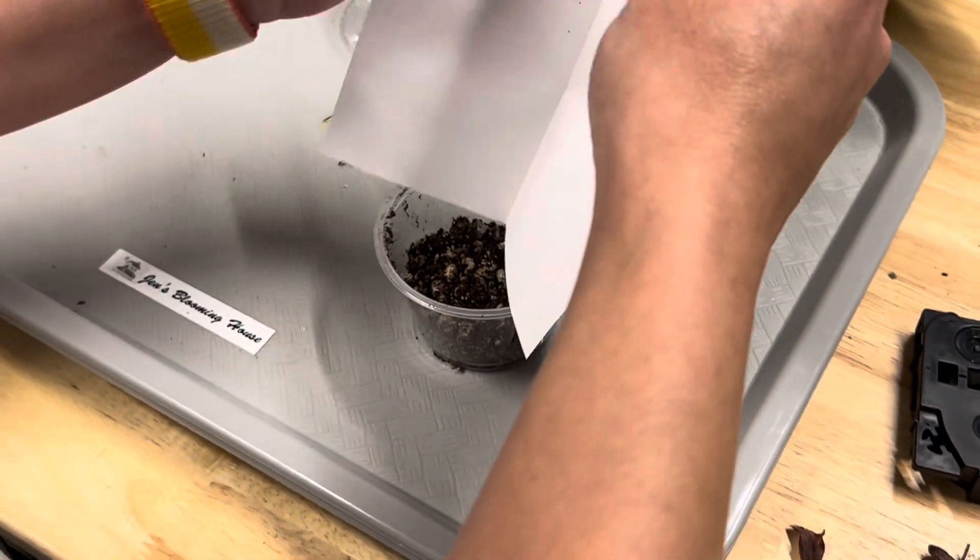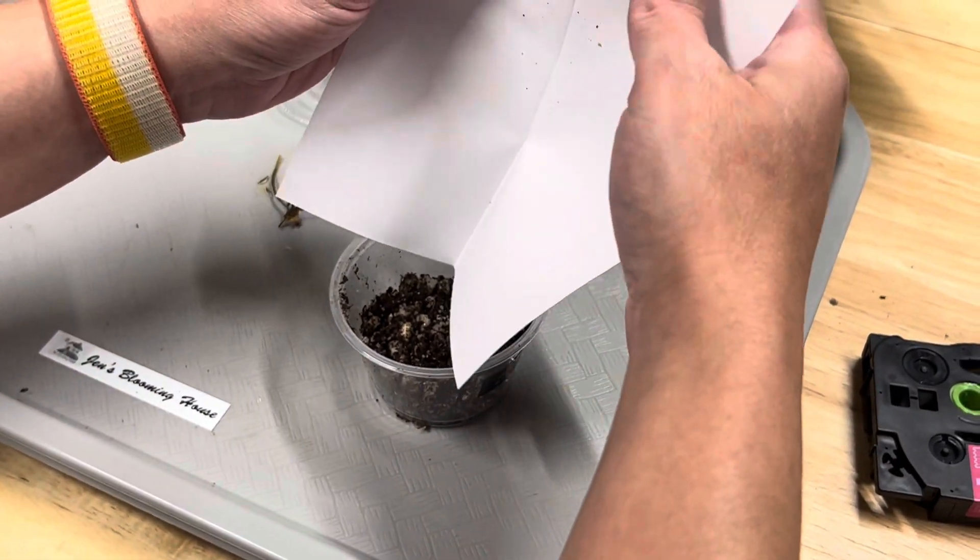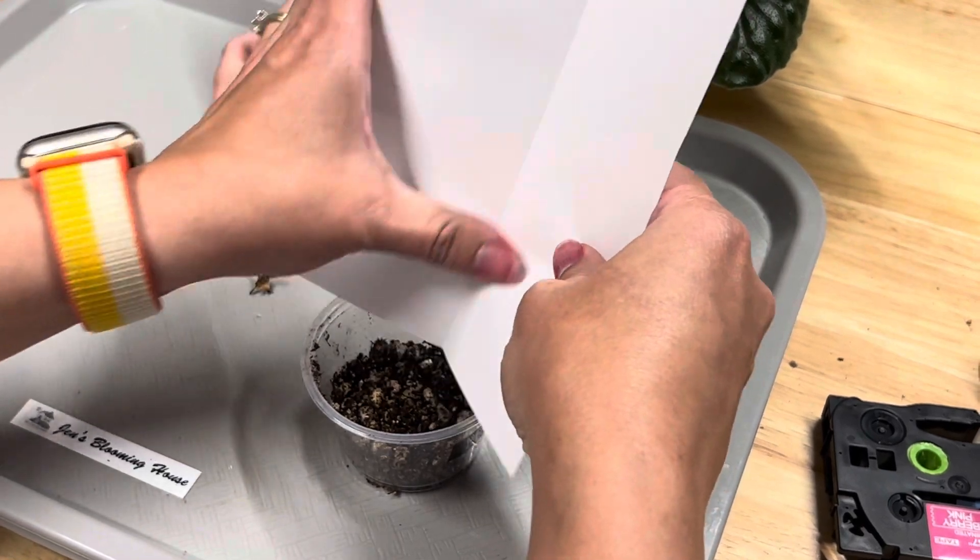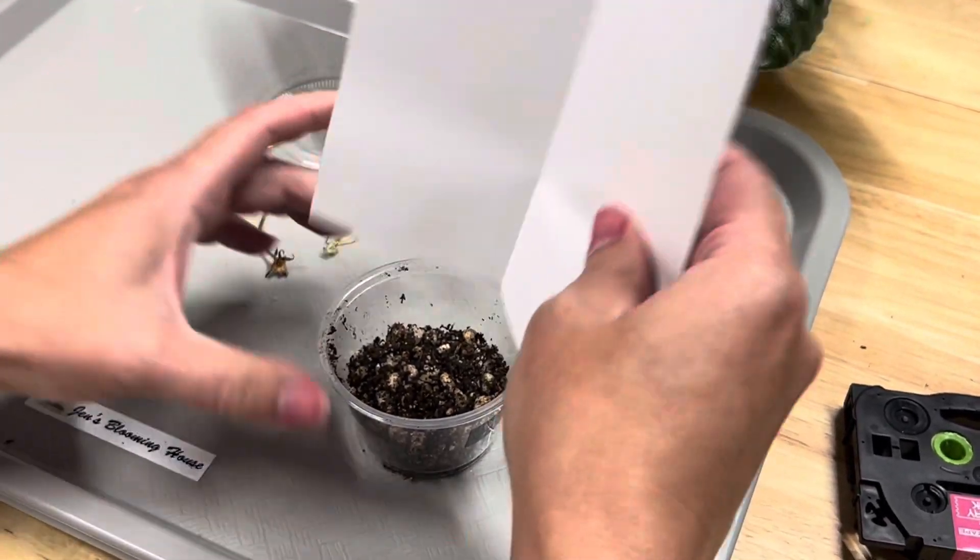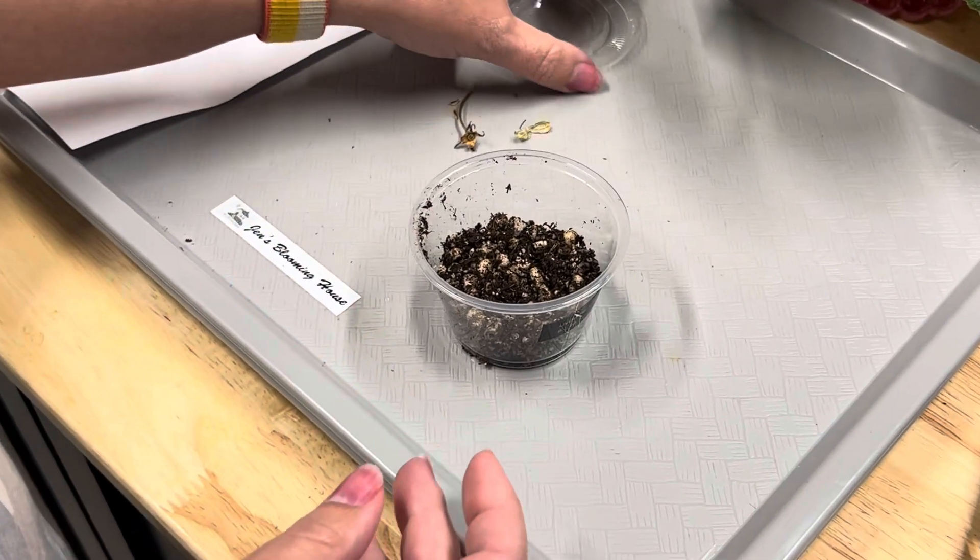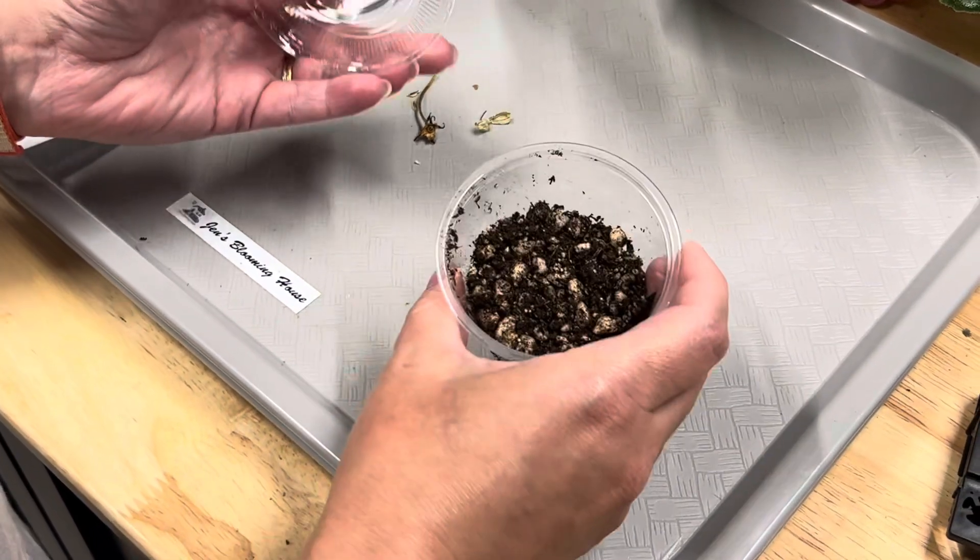I'll try to get them kind of spread out in there. It's kind of hard, they usually get all clumped together in one spot even if I try to spread them out. All right, we'll check back in about 10 days, maybe 14 days, and we should have little seedlings.